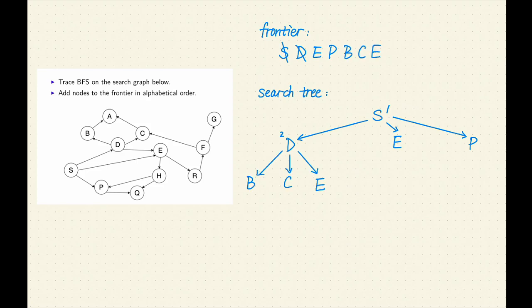Step 3. The oldest node added to the frontier was E. E is the third node expanded. Remove Y from the frontier. E is not a goal. Let's expand E. E has two successors, H and R. Let's add them to the frontier in alphabetical order and add them to the search tree.